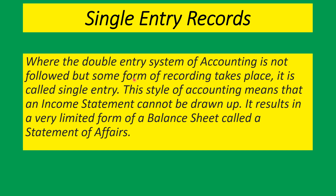This type of accounting means that an income statement cannot be drawn up, since you would not have records for sales and so on — you would not have a sales journal and purchases journal, but you will mostly have cash transactions. It results in a very limited form of a balance sheet called a statement of affairs. A statement of affairs is similar to a balance sheet — it looks like a balance sheet but it is not a balance sheet. It can take any form as long as you have the assets, the liabilities, and the capital on it.